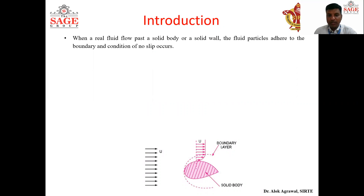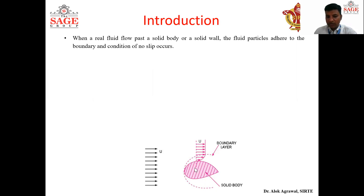We will consider a solid body inside a medium where fluid is flowing — generally we consider that fluid is water, though you can take any other fluid as well. There is a solid boundary and the fluid is flowing with velocity U from left to right. When a real fluid flows over a solid body or solid wall, the fluid particles will try to adhere to this solid body because of the no-slip boundary condition. The fluid passing over the solid body will try to attain the velocity of that solid body: if the body is at rest the fluid will be at rest, and if the body is moving with a certain velocity the fluid will attain that velocity.